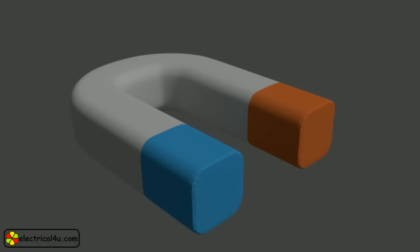This system consists of a simple horseshoe-shaped permanent magnet. Two ends of the magnet are North Pole and South Pole respectively. These two magnetic poles create a uniform magnetic field between them.